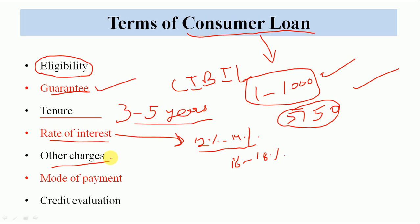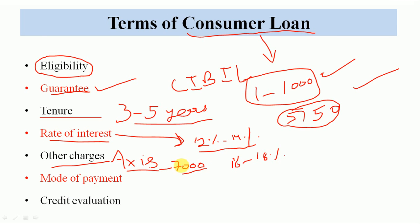Agar aapka personal loan ki baat karte hain, to government employee ko 12% se lekar 14% personal loan milta hai. Aur agar aap contractual level pe ho ya aapne abhi just employment start ki hai, to aapko 16%-18% tak bhi aapse interest charge kiya jata hai. Bhaut saare other charges bhi chupi hote hain — khas kar jo private bank hain: ICICI, HDFC, AXIS bank — yeh aapse document charges, processing fees, service charges, aur collection cost bhi lete hain.